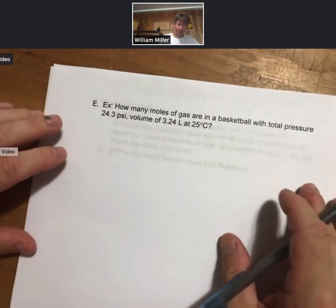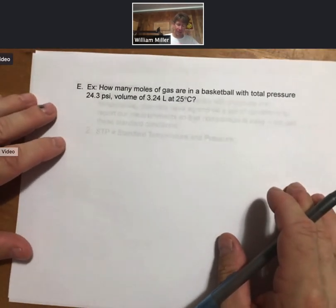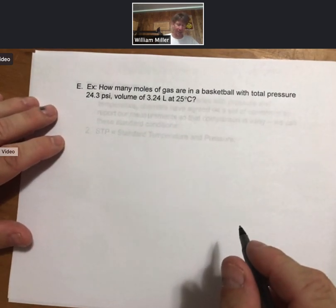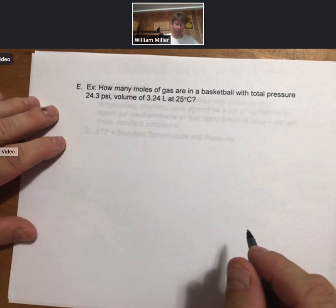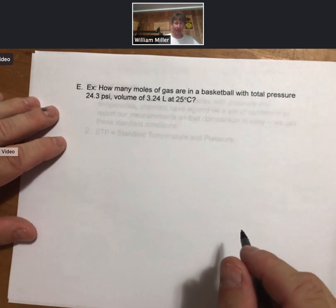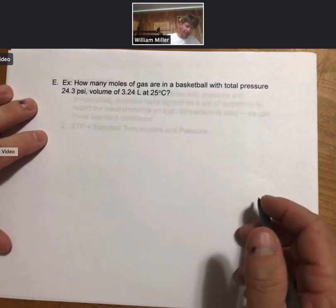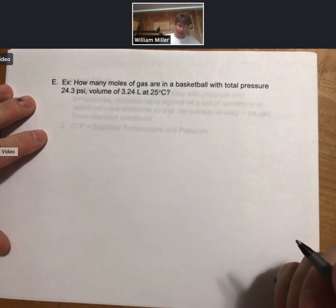So what we want to go ahead and do is start using this. For example, how many moles of gas are in a basketball with total pressure 24.3 psi, volume of 3.24 liters and temperature of 25 degrees Celsius? So this is a great question for the ideal gas law.